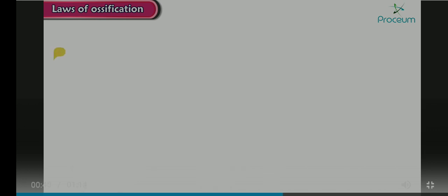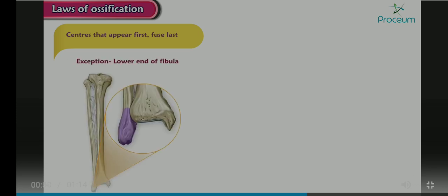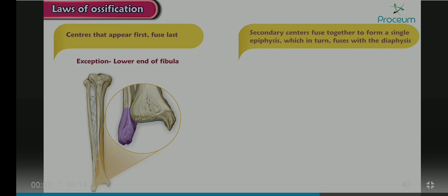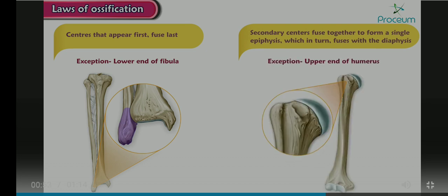The centers that appear first fuse last. An exception is the lower end of the fibula. The secondary centers fuse together to form a single epiphysis, which in turn fuses with the diaphysis. An exception would be the upper end of the humerus.